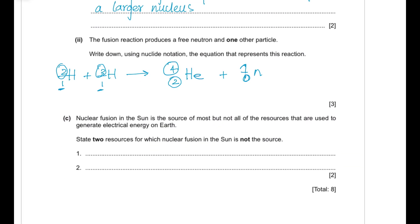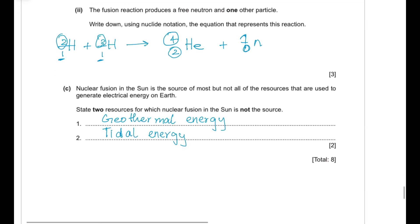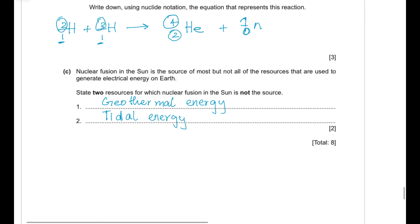Part (c): nuclear fusion in the Sun is the source of most but not all energy resources used to generate electricity on Earth. State two sources for which solar nuclear fusion is not the source. Examples include geothermal energy, tidal energy, and nuclear energy — write any two. That completes this paper — thank you for watching.